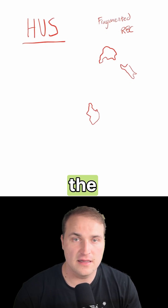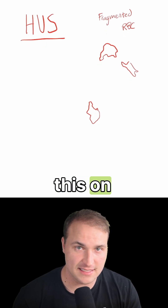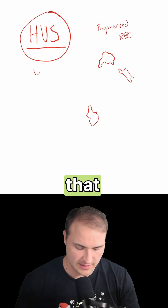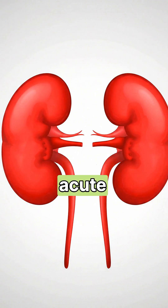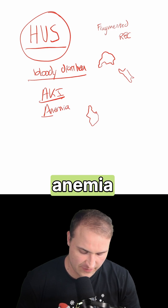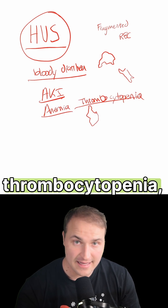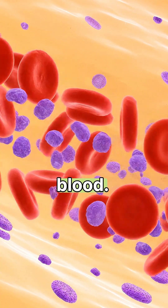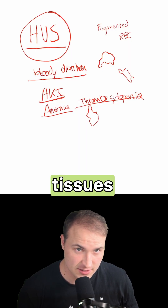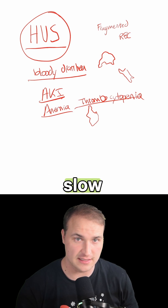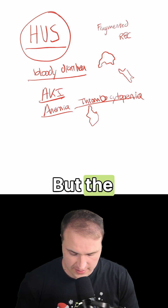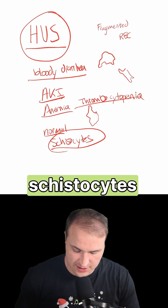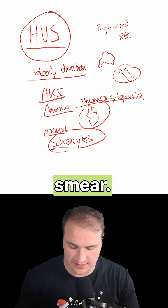Hemolytic uremic syndrome. The way they like to test this on USMLE is they'll have a child with HUS. They'll say that they might have some acute kidney injury. They're definitely going to have anemia and thrombocytopenia — a deficiency of platelets in the blood — which causes bleeding into the tissues, bruising, and slow blood clotting after injury. But the coagulation studies are going to be normal, and you're going to see these schistocytes on the smear.